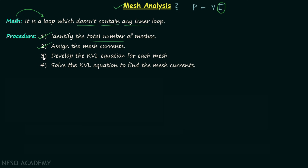In the third step we are required to develop the KVL equation for each mesh. And in the fourth step we need to solve the KVL equations which we have developed to find the mesh currents assigned in step number two. So these are the four steps involved in performing the mesh analysis. Once we have the mesh currents we can perform the required calculations according to the given question.